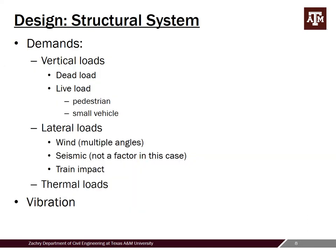For designing the structural system, you need to take into account a lot of different load effects. In the vertical direction, you have the dead load and self-weight of the structure. There's also live load — pedestrian and even small vehicles need to be taken into account. At the time this was done, the older AASHTO spec specified 85 pounds per square foot for pedestrian loading, now maybe 90. All this information comes from AASHTO, so you can go there and find all that information.